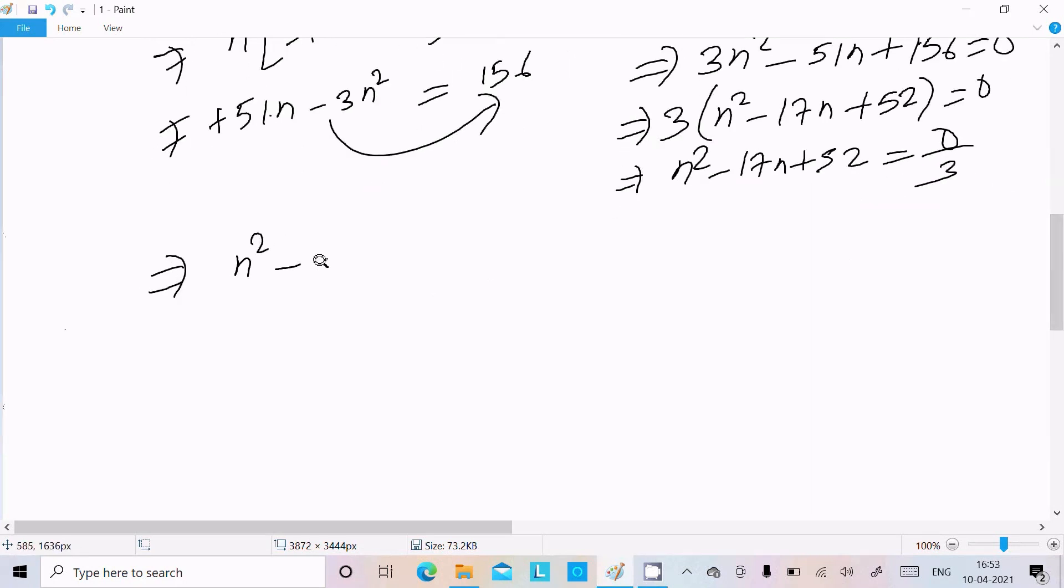We need to solve n squared minus 17n plus 52 equals 0. We can easily factor: n squared minus 13n minus 4n plus 52. Taking n common: n(n minus 13) minus 4(n minus 13) equals (n minus 13)(n minus 4).